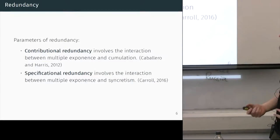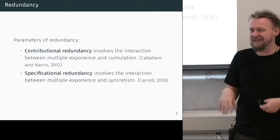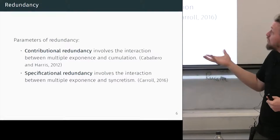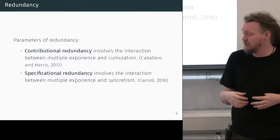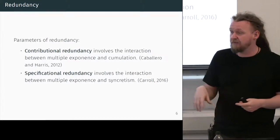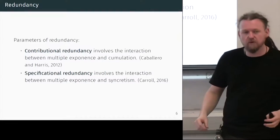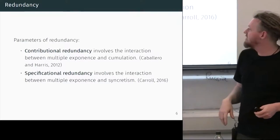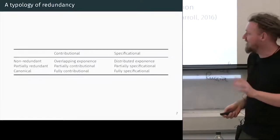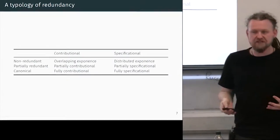What I'm going to argue now is that there are two different ways we can think about redundancy. The first I'm going to call contributional redundancy — in linguistic terms, the interaction between multiple exponents and cumulation. There's a paper by Gabriela Cabriero and Alice Harris from 2012 where they look at multiple exponents more broadly and talk about redundancy, and that basically matches their definition. The new stuff — which is mine — is what I'm going to call specificational redundancy. There are two parameters of the typology with various logical levels, which create six different types of redundant exponents.